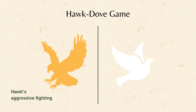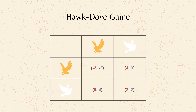A Dove — this strategy involves retreating and conceding the resource to avoid conflict. A Dove loses to a Hawk, but avoids injury. Here are the payoffs. Each strategy has associated payoffs or benefits. Winning the resource provides a high payoff; losing gives a low payoff. And fighting might incur an injury cost, while avoiding conflict might actually allow sharing the resources.